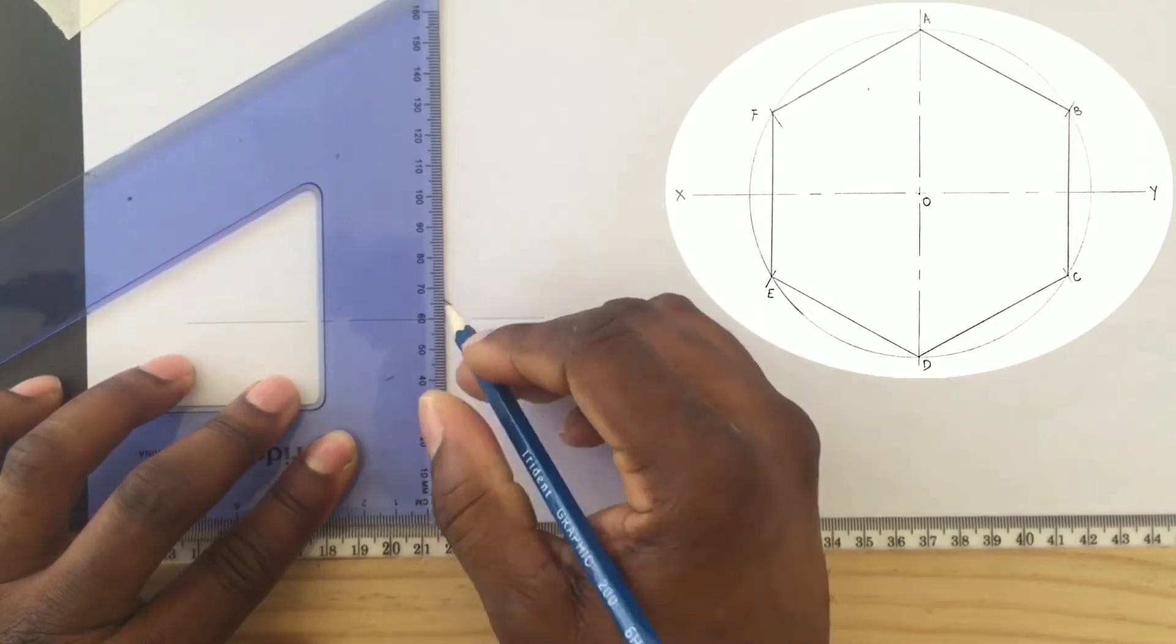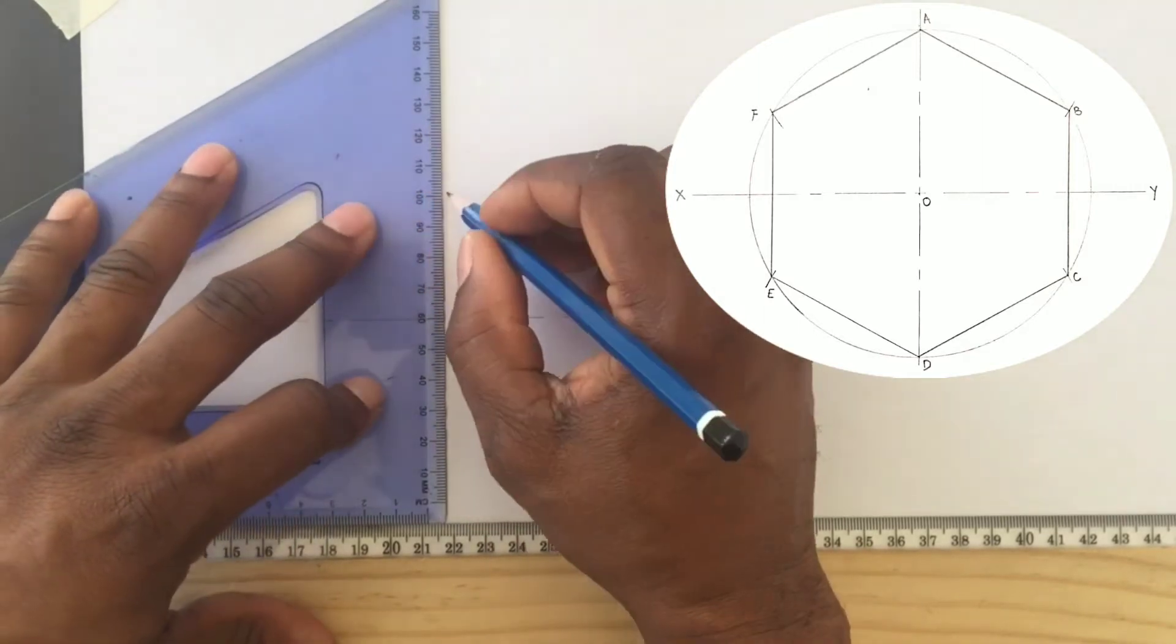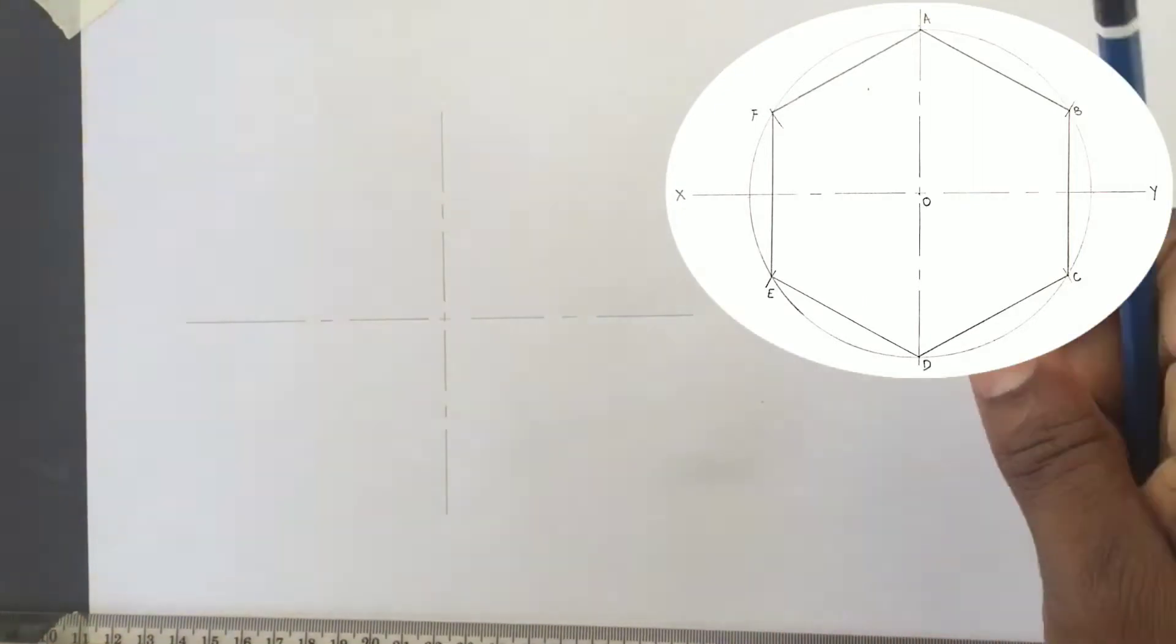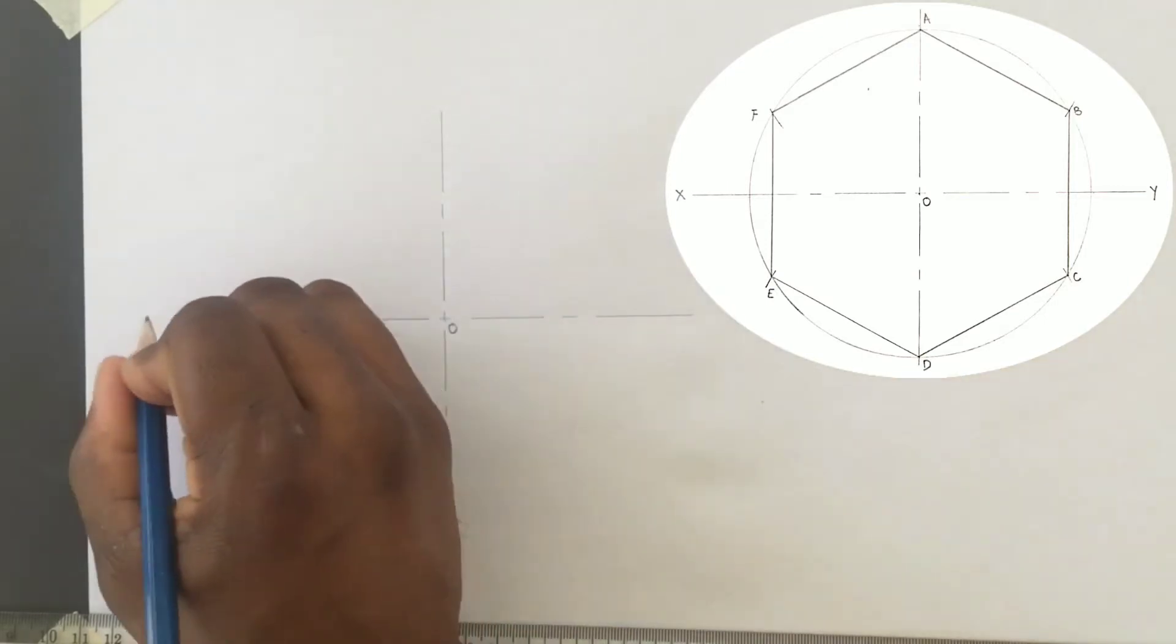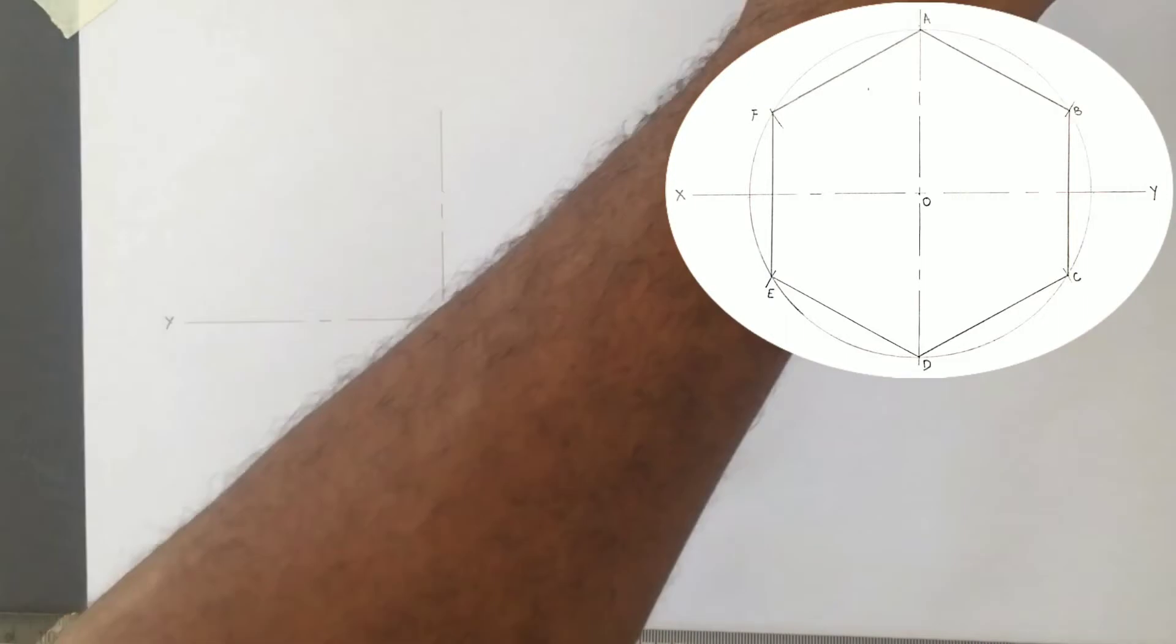Remember to hold your t-square firmly against your drawing table and ensure your set square is sitting firmly on top of your t-square. Identify the center as point O. Label the horizontal center line XY.